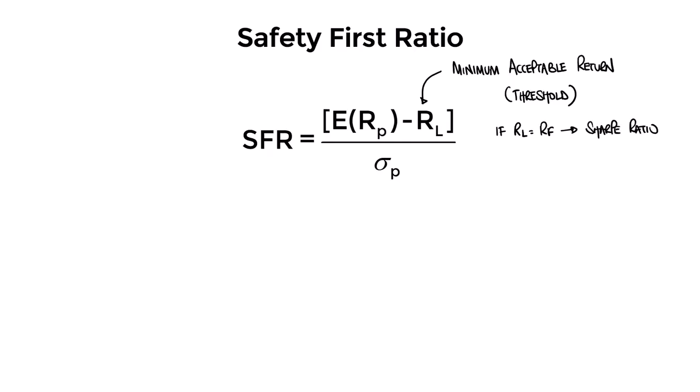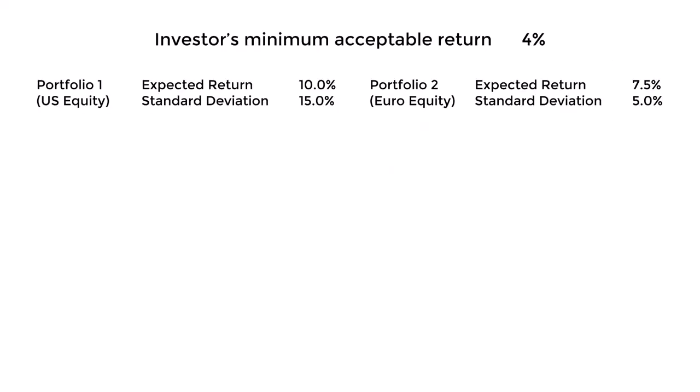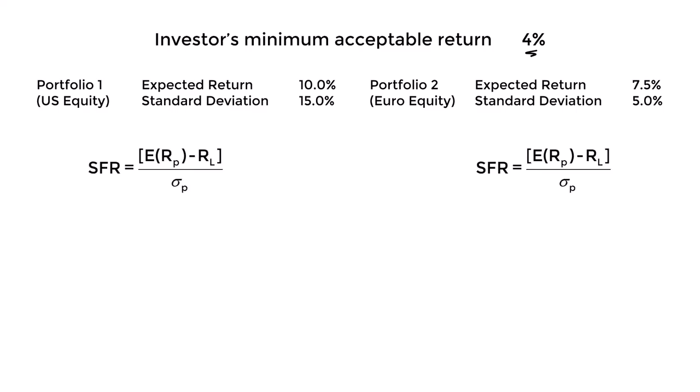Dividing the excess return by the standard deviation means the safety first ratio we calculate is effectively a number of standard deviations. To illustrate, let's put some numbers in for two portfolios. Imagine an investor with a minimum acceptable return of 4%. That investor is deciding between a portfolio of US equities — portfolio one — and a portfolio of European equities — portfolio two. To calculate the safety first ratio we just need the expected returns and the standard deviations of each portfolio.